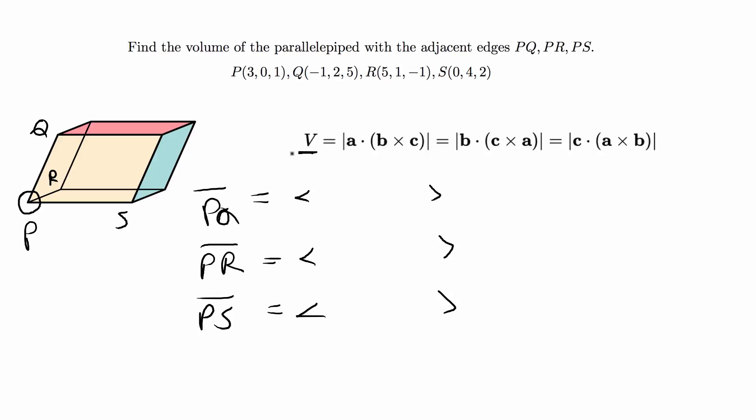And the volume which we're asked to find is the absolute value of this triple product. If we consider PQ to be a, PR to be b, and PS to be c, then the triple product of either a·(b×c) will be the solution to the problem.